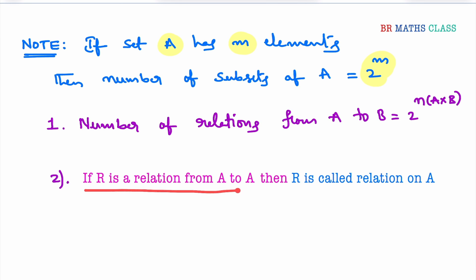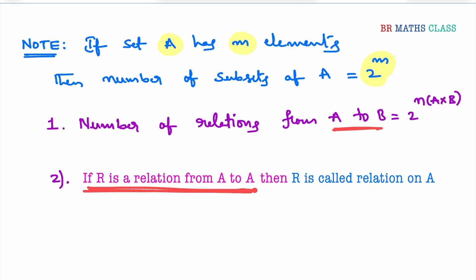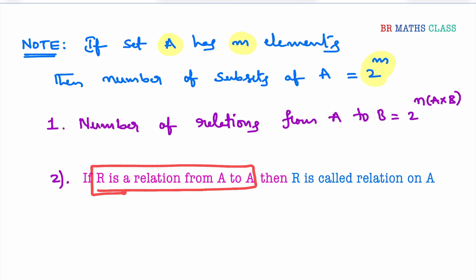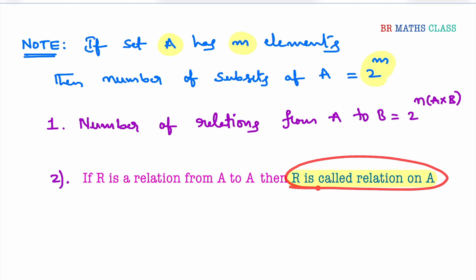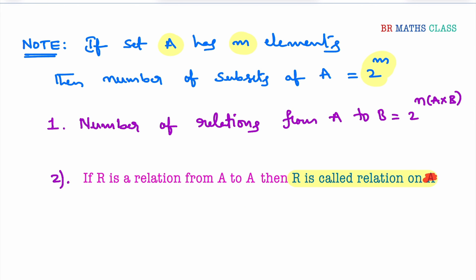Note 2: if R is a relation from A to A, that means R is a subset of A cross A. Any subset of A cross B is called a relation from A to B. So if R is a subset of A cross A, then R is a relation from A to A. This is also called R is a relation on A. Whenever you see 'R is a relation on A', it means R is a relation from A to A. We use this frequently throughout this chapter.